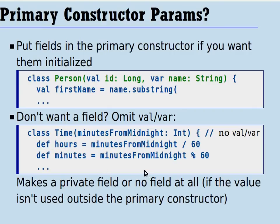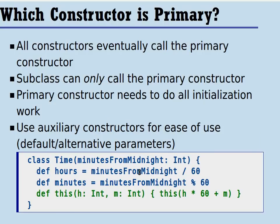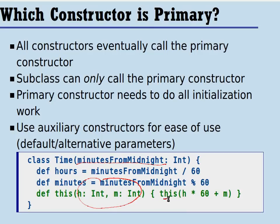Finally, as we talk about constructors, in Scala you must decide which constructor is primary. All constructors must eventually call into the primary constructor, and subclasses must always call the primary constructor — a subclass cannot call an auxiliary constructor. So it's important that the primary constructor does all the important initialization work, and auxiliary constructors serve auxiliary purposes such as supplying default parameters or alternate initialization. In the time class example, the primary constructor takes minutes from midnight and sets hours and minutes accordingly. An auxiliary constructor can accept hours and minutes directly, then call the primary constructor to compute the minutes from midnight.